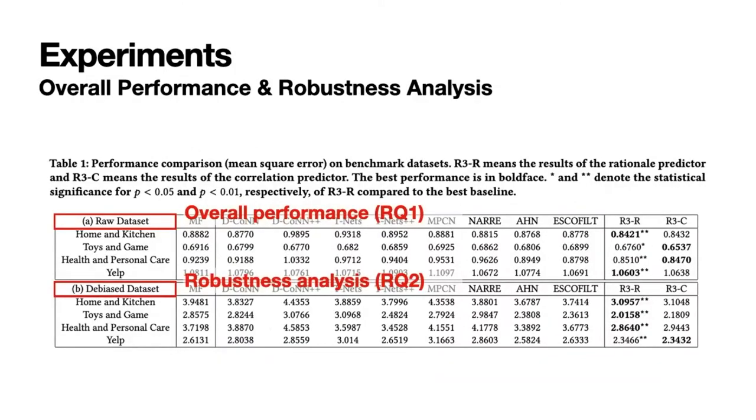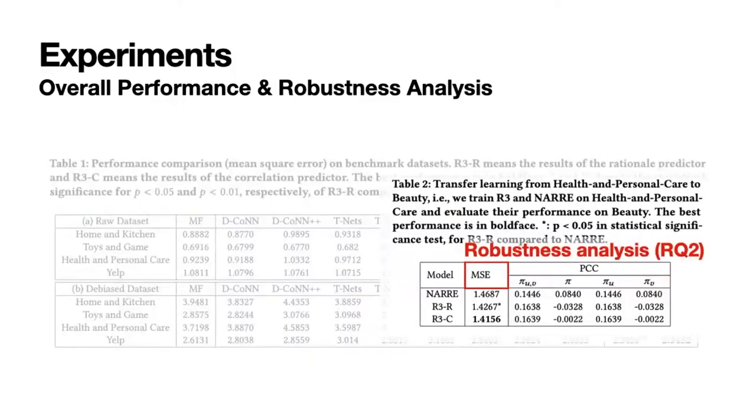We evaluate the overall performance on the raw datasets, which uses the normal test sets. Moreover, we evaluate the robustness on the de-biased dataset to check if R3 gets rationales instead of correlations. Results show that our model outperforms existing methods and achieves more robust results on datasets with new rating distributions. And the transfer learning experiment also indicates that our methods can better capture the invariant features across datasets.